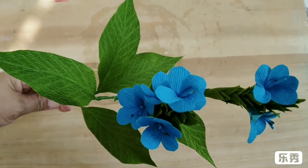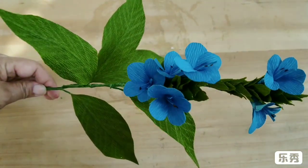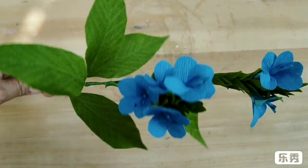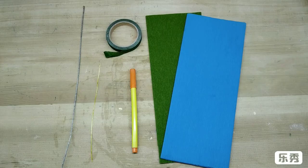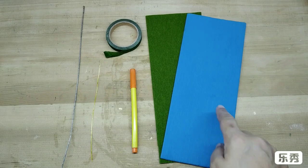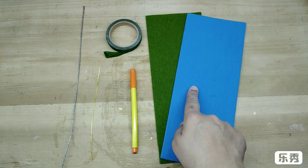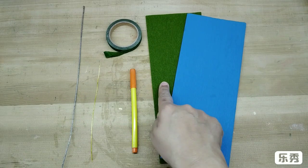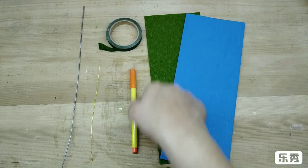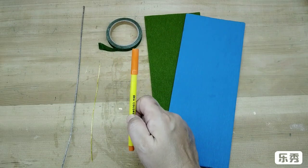Hi, today I am going to make eranthamum, a very pretty flower and very easy to make. Materials I am using are crepe paper, double crepe paper in blue and green, a green floral tape, an orange colored pen, a thin wire and thick wire.